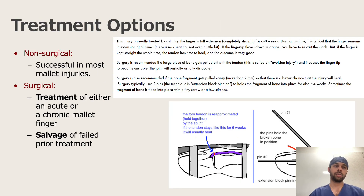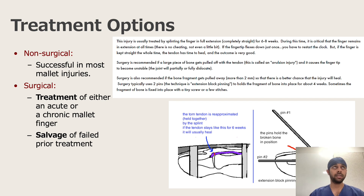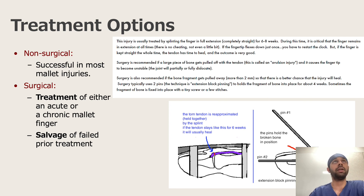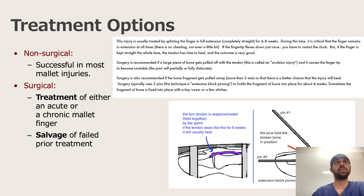Treatment options: generally, non-surgical management is successful in most cases. However, when the deformity is chronic and not reducing, surgical methods may be required. There are a number of surgical options — the best one is extension block pinning, as clearly shown in the picture. You either extend them with a splint or place a wire through the joint, blocking the tendon reduction with one of the pins.